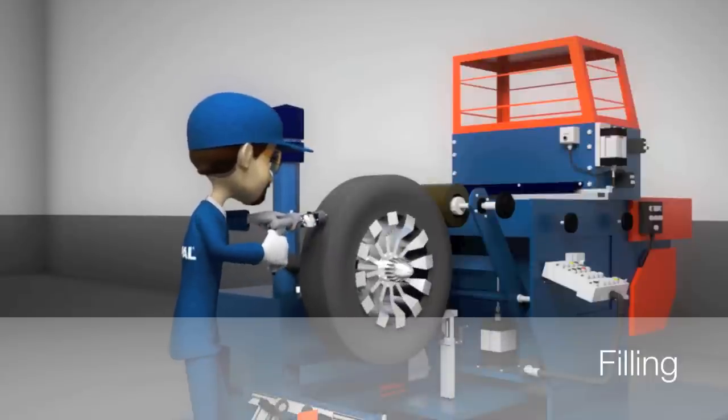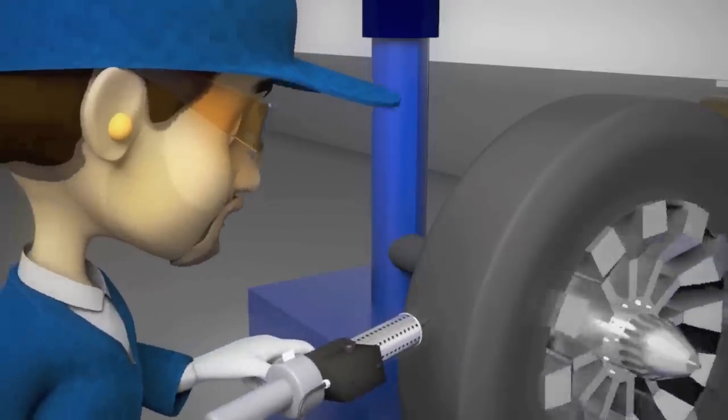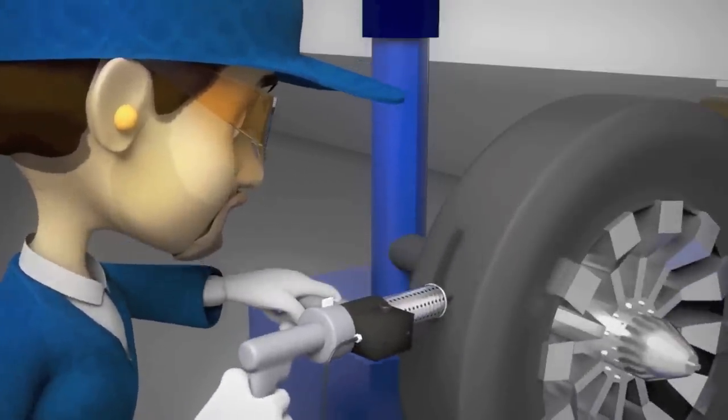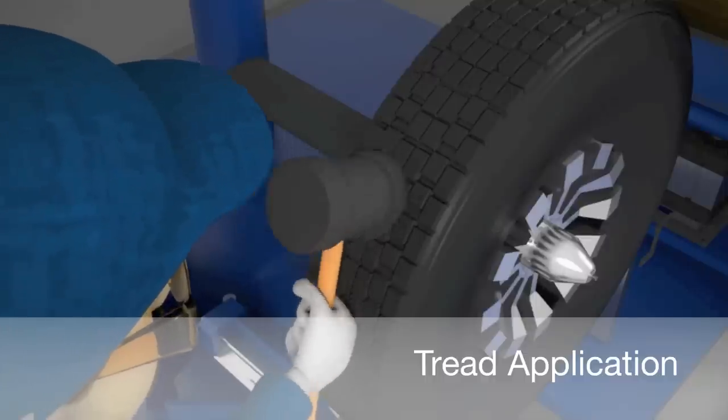The skived areas are filled with rubber, levelling them with the tyre's surface. A new tread is applied in order to restore the tyre conditions of usage.